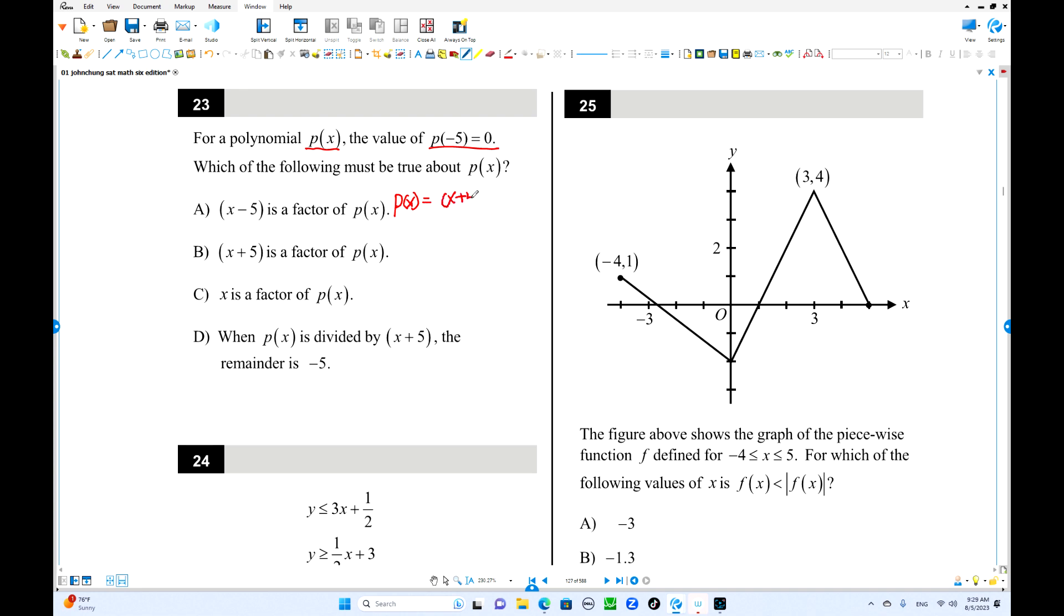x plus 5 times a quotient, something like this one. When you put the number negative 5 there, this is 0. If P of negative 5 equals some number, I'm going to use a constant r. Now P(x) must be x plus 5 times a quotient x^n plus r.